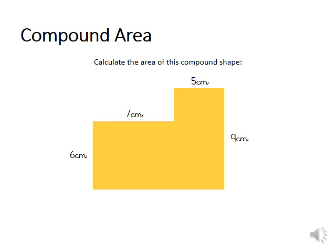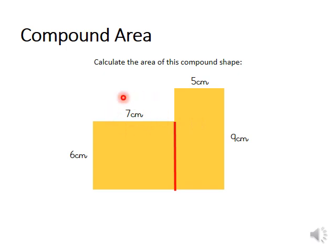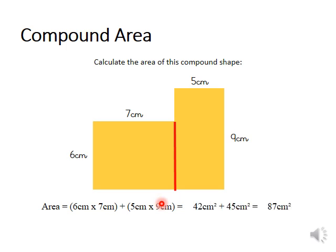So we now need to calculate the area of this compound shape. The first thing I'm going to do is split it into two different rectangles. Draw an imaginary line down your computer and split this into two different rectangles. I decided to draw my line here because I could clearly see the lengths. So I need to find the area of both rectangles. I'm going to do length times width: 9 times 5 gives me 45 cm² for this rectangle. And then 7 times 6 gives me 42 cm². I'm then going to add 42 cm² and 45 cm², and my answer is 87 cm².